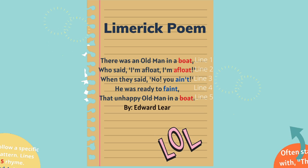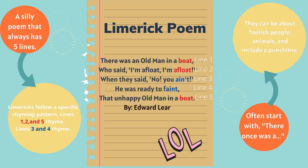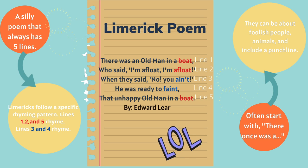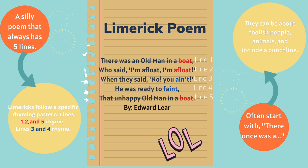Today we're going to start by talking about a limerick poem. A limerick is a silly poem that always has five lines. Limericks follow a specific rhyming pattern. As you can see from the poem by Edward Lear, lines 1, 2, and 5 rhyme, and lines 3 and 4 also rhyme.